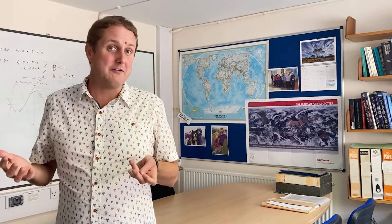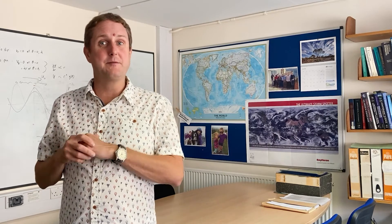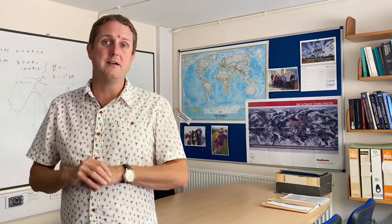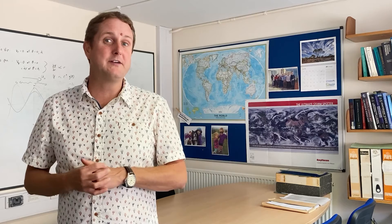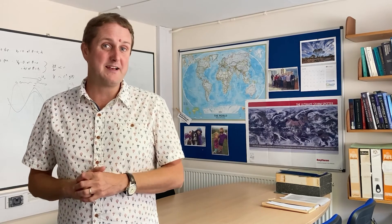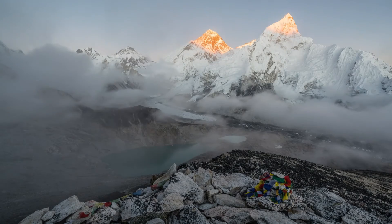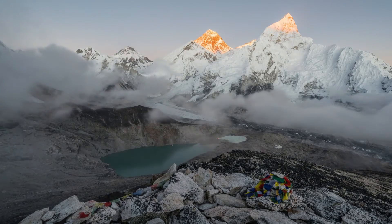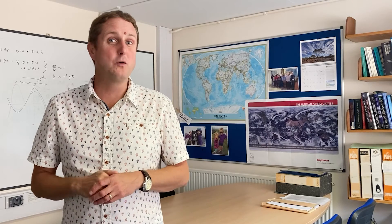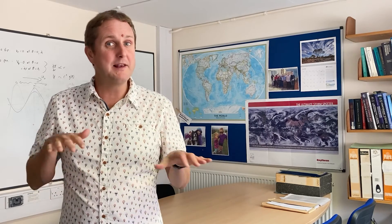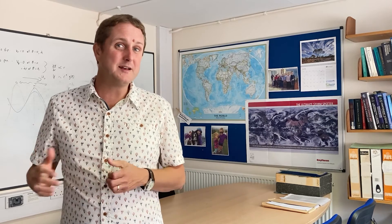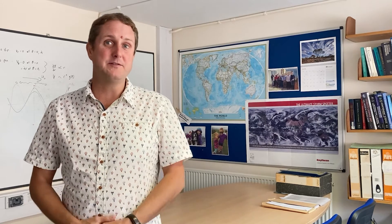In any fluid the pressure increases with depth, just as it does in the swimming pool. Looking at that the other way around, it means that the atmospheric pressure decreases with height above the earth's surface. For example, the atmospheric pressure at sea level is about one hundred thousand pascals, but at the top of Everest, where there's much less air above, it's just thirty thousand pascals. Air pressure can also vary from place to place depending on the weight of air above a particular place at a particular moment in time.